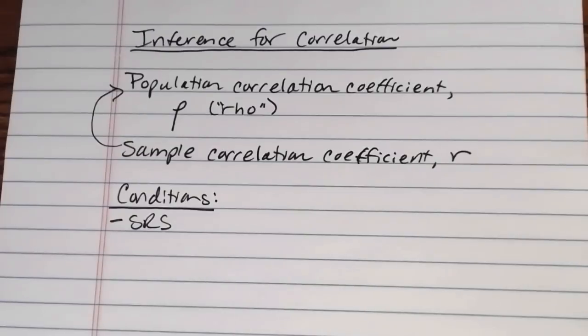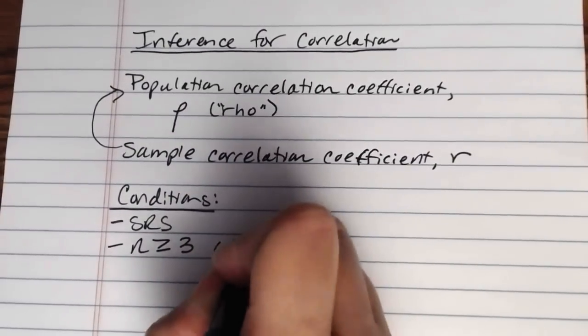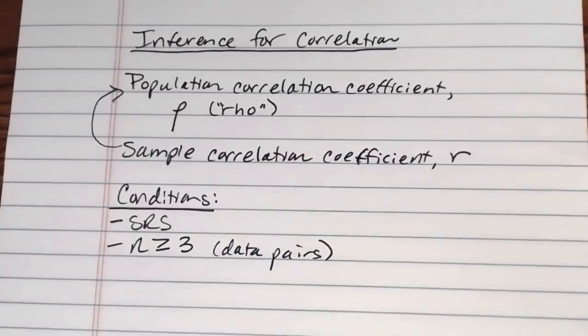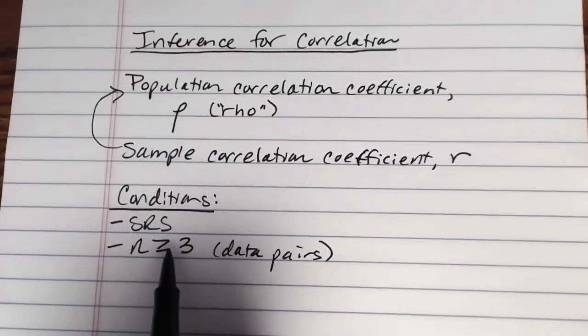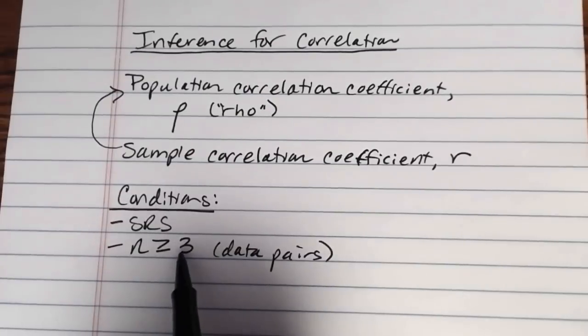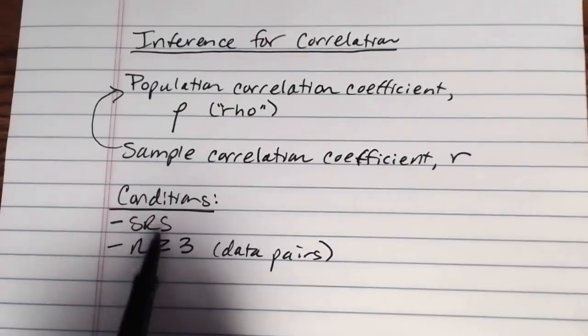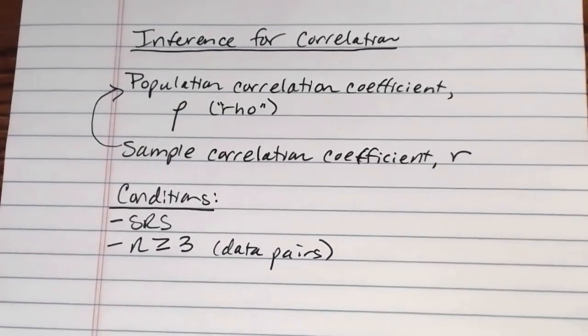The other thing that's really important here that needs to be met is that we have to have a sample of at least three data pairs. So n greater than or equal to three. Otherwise, if you try and run this test on two or fewer points, two points on an xy coordinate grid always make a perfect straight line. So if you were doing this with two points or less, you would always get 100% correlation between the two variables. So you've got to have at least three in order to run this test.